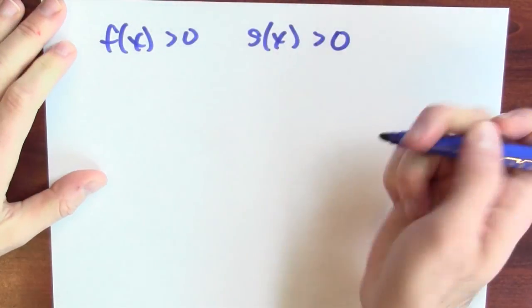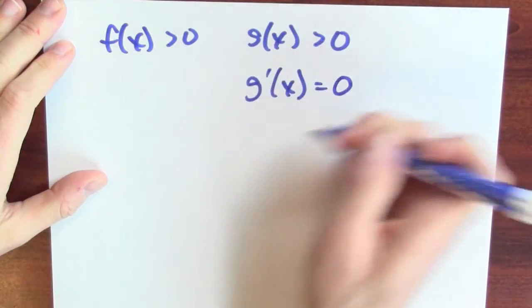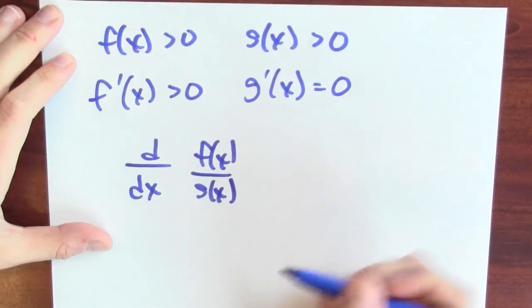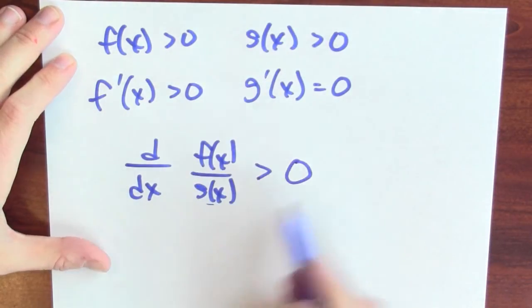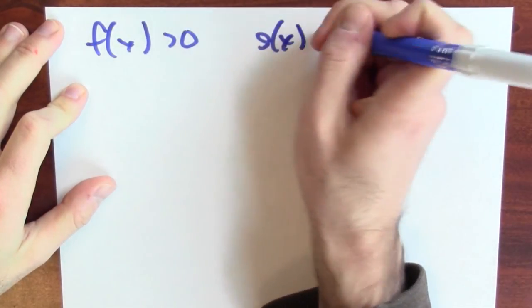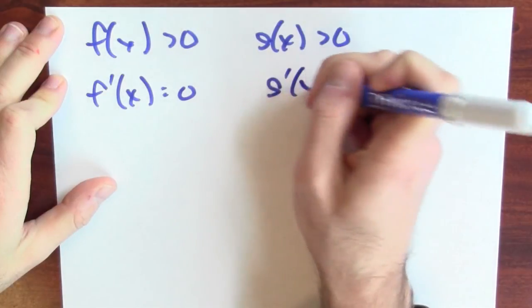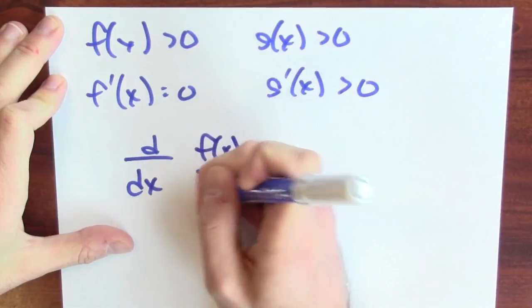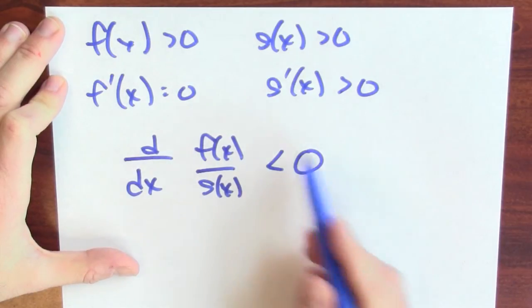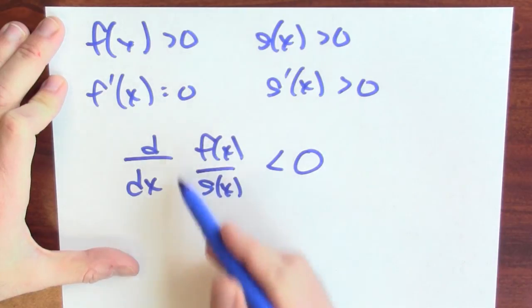How does this relate to the derivative? Think about the sign of the derivative. Same setup: f(x) is positive, g(x) is positive. Maybe the denominator isn't really changing, but the numerator is getting bigger — then the fraction should be getting bigger, which tells us something about the sign of the derivative. We can similarly analyze the denominator: if the numerator is positive and the denominator is positive, and the numerator is not really changing, but the denominator is getting bigger, then f(x)/g(x) is getting smaller. That tells us the sign of the derivative of this ratio is negative.